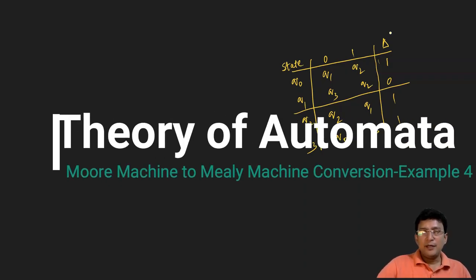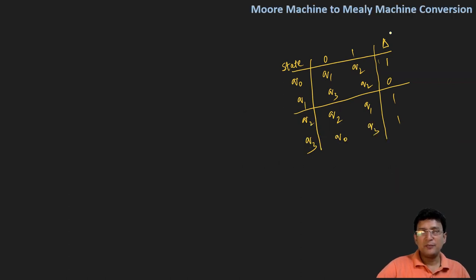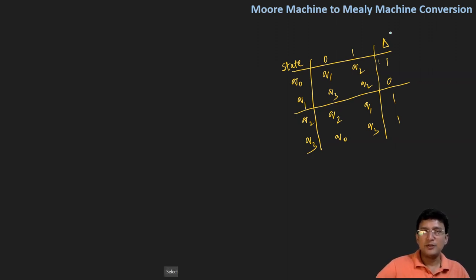Hello everyone, we are learning how to convert the given Moore machine to the Mealy machine. The Moore machine is given in the form of a table, which is the transition table. If you have to convert this to the Mealy machine, it means that we will have to associate the outputs with the transitions.